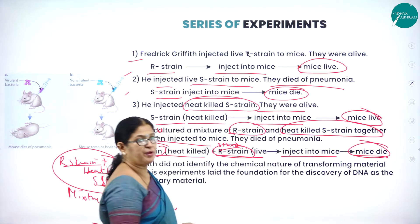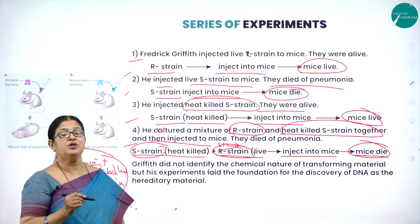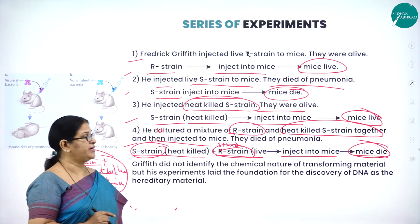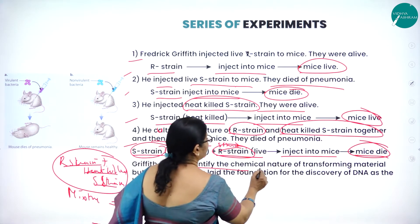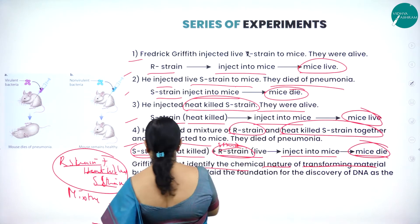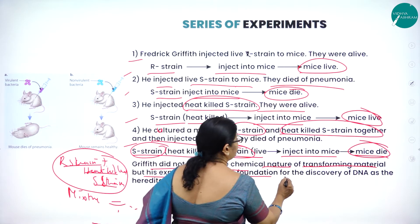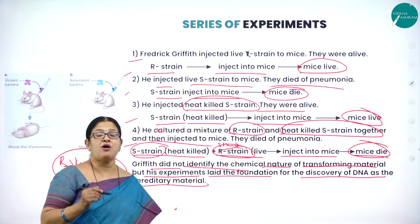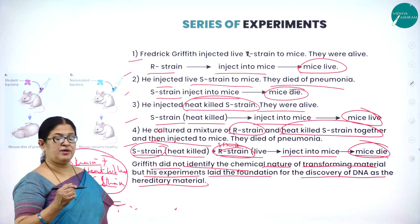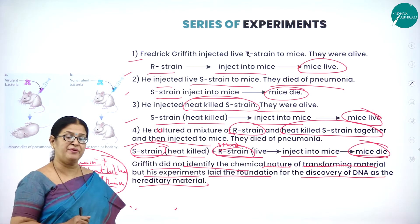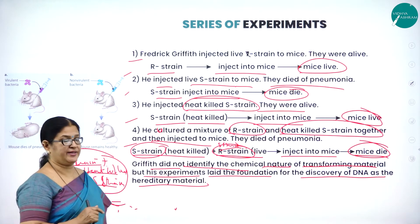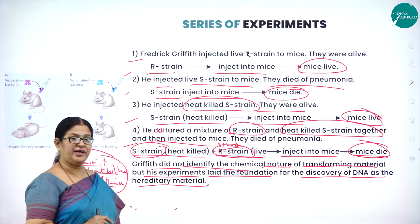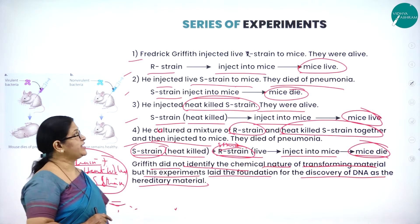With this very simple experiment, he was able to prove the transforming principle — that DNA is a genetic material. Griffith did not identify the chemical nature of the transforming material, but his experiments laid the foundation for the discovery of DNA as the hereditary material, proving that DNA is responsible for hereditary characters.